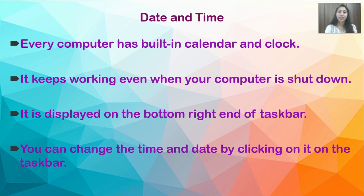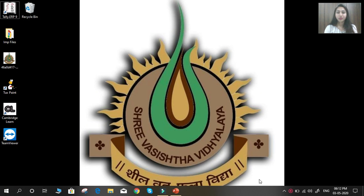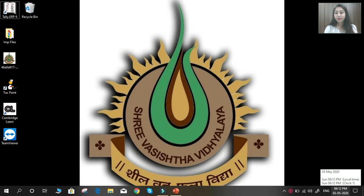Our next topic is date and time. Every computer has a built-in calendar and clock. It keeps working even when your computer is shut down — meaning if you shut down your computer, your date and time is still running. It is displayed at the bottom right end of the taskbar. You can change the time and date by clicking on it on the taskbar. Here you can see at the bottom right corner your current time and date is displayed.